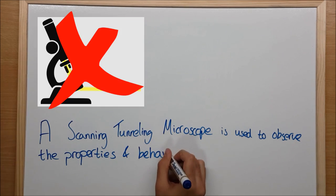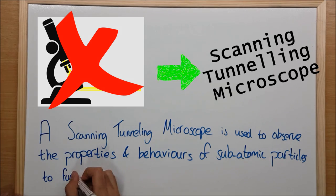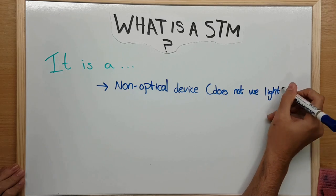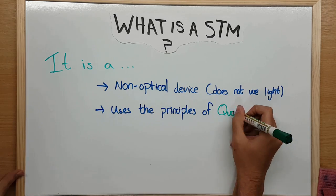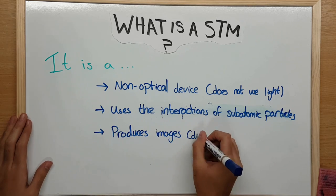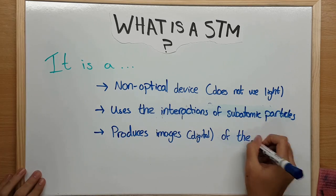For us to observe these properties and behaviors, we need an instrument like the scanning tunneling microscope. A scanning tunneling microscope is a non-optical device that uses the principles of quantum mechanics, basically the interactions and motions of subatomic particles, to produce a digital image of a certain specimen.